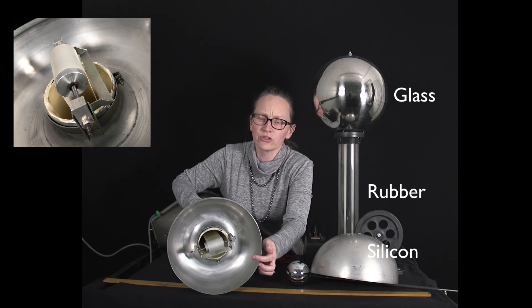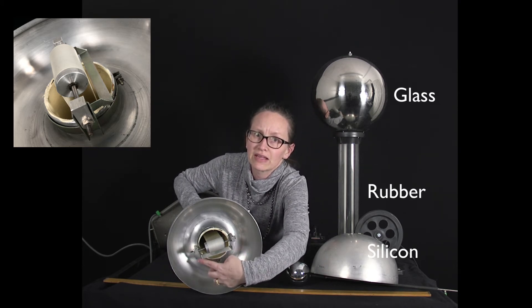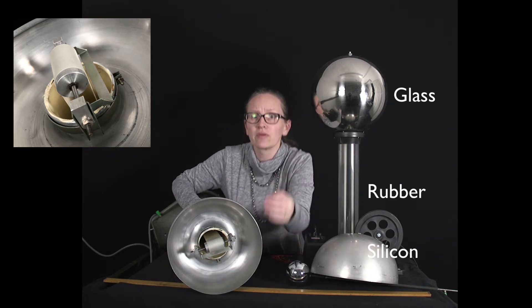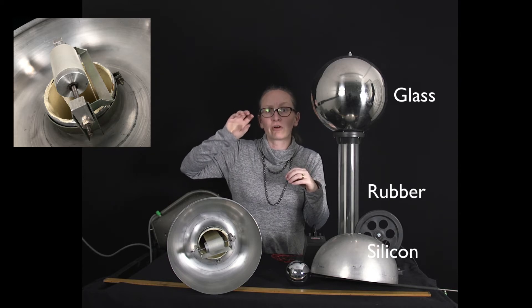Now hopefully what you can also see inside this Van de Graaff generator is a strip of metal along here. We've got a strip of metal very close to the very positive roller.